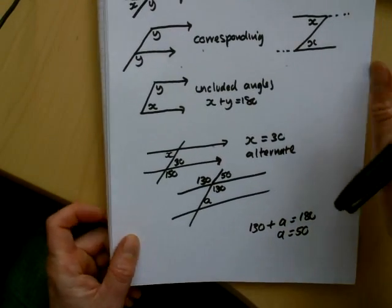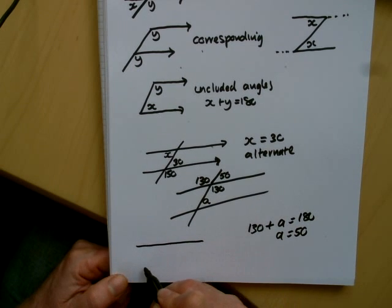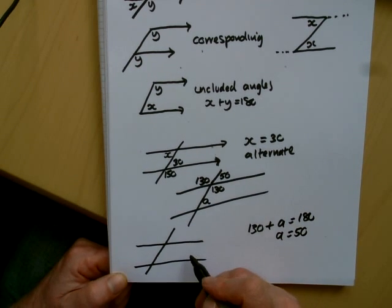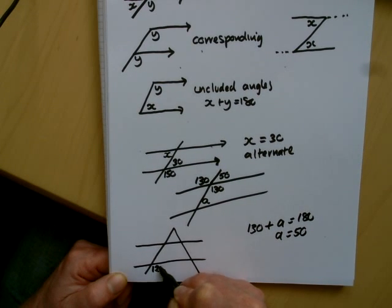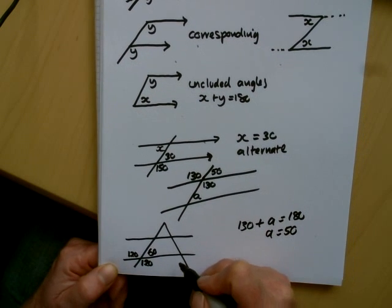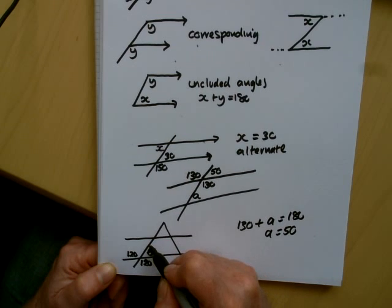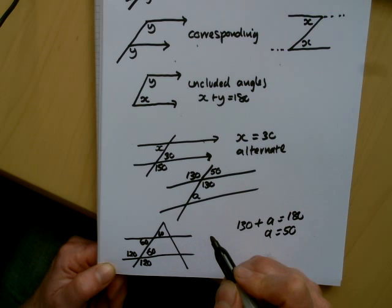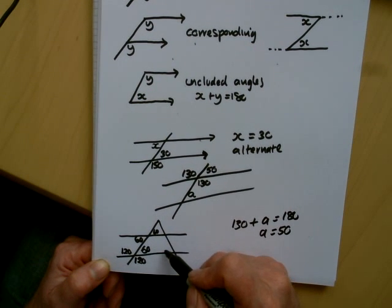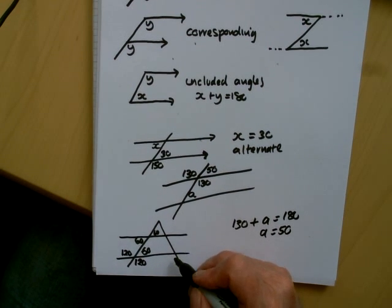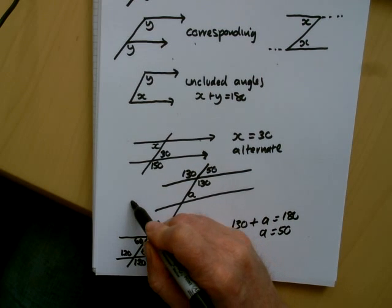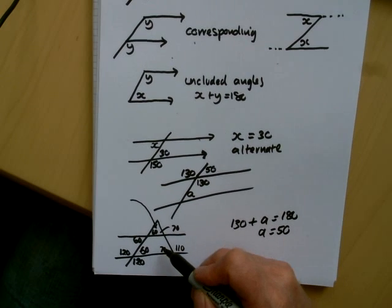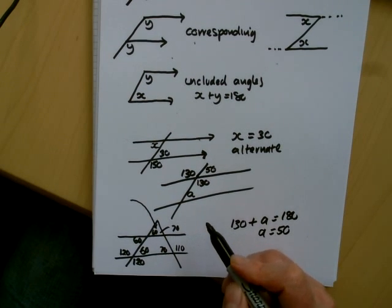We'll do one more example with parallel lines. If we have the angle here of 120, we can fill in several angles: 120 and 120 because they're opposite angles, and 60 here because they're on a straight line. This would be 60 because of the alternate angles, and 60 because of the opposite angles. We'd also need an additional angle — suppose we have the angle there as 110, giving us 70 here and 70 there. This 70 is on a straight line, and this corresponds to the angle of 70 over here.